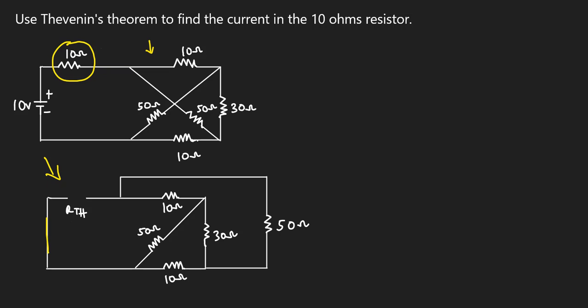I name one node as node A and another as node B. This naming is consistent with the original circuit — it hasn't changed. Looking at this circuit closely, you can see that we have a delta connection here, and to solve the question we will need to convert this delta connection to a star connection.